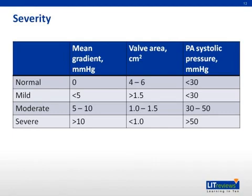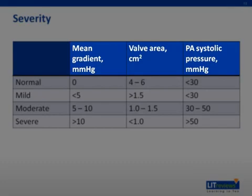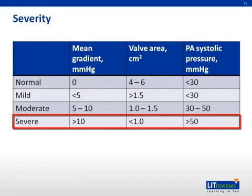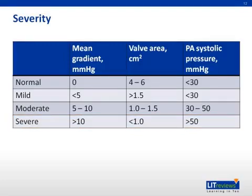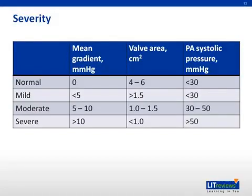Mitral stenosis is most appropriately described as a disease continuum, and no isolated value can consistently and accurately define severity. The 2008 ACC/AHA guidelines use mean gradient, pulmonary artery systolic pressure, and valve area to classify severity, with severe MS having a mean gradient greater than 10 mmHg, a pulmonary artery systolic pressure greater than 50, and a valve area less than 1 cm². Serial echocardiographic studies have demonstrated an annual loss of mitral valve area between 0.1 and 0.3 cm² per year. Asymptomatic patients with mild MS should be screened with a transthoracic echocardiogram every 3 to 5 years, those with moderate MS every 1 to 2 years, and those with severe MS every year. Symptomatic patients should be screened if they develop a change in their symptoms. Transesophageal echocardiogram is indicated if data from transthoracic echocardiogram is not adequate.